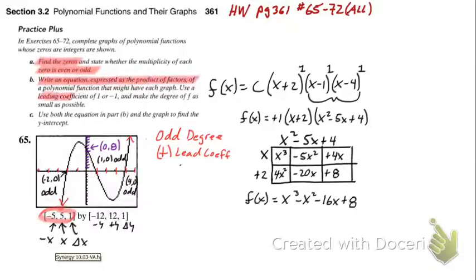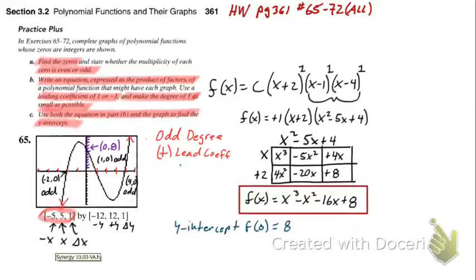Now they have one last instruction here. What's with this y-intercept thing? I can read from the graph that my y-intercept is x equals 0, y equals 8. So let's substitute 0 into our equation. See if that checks out. And when I do, we plug in, we find that f(0) is indeed 8.